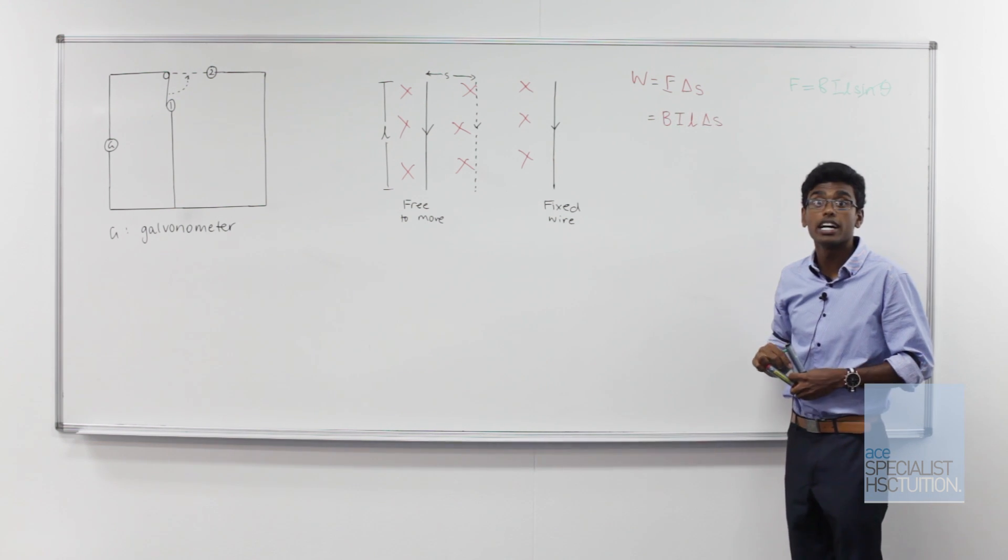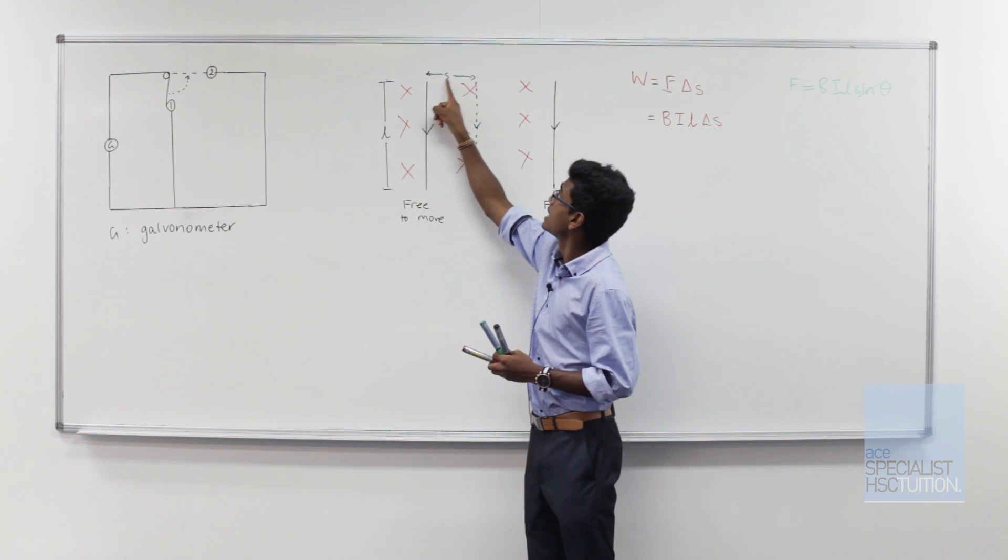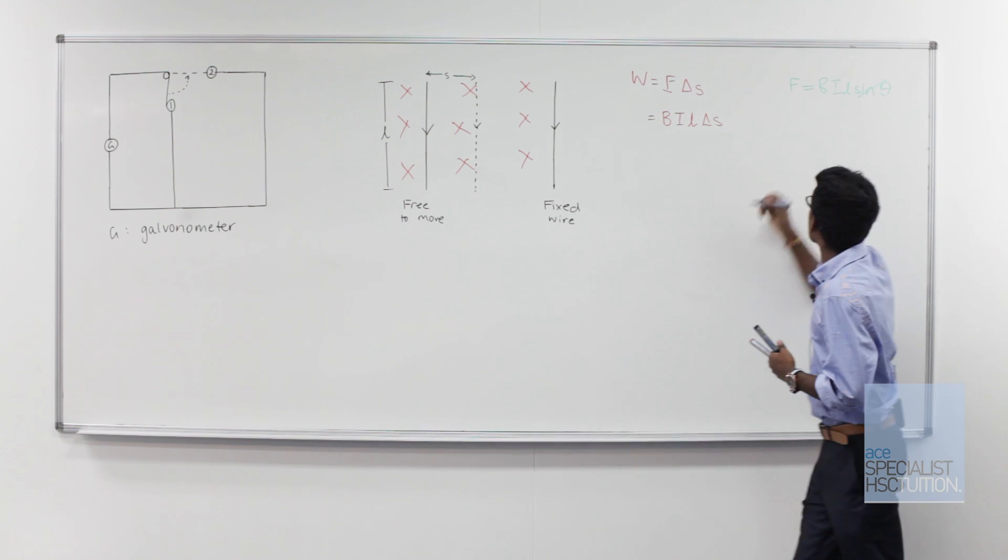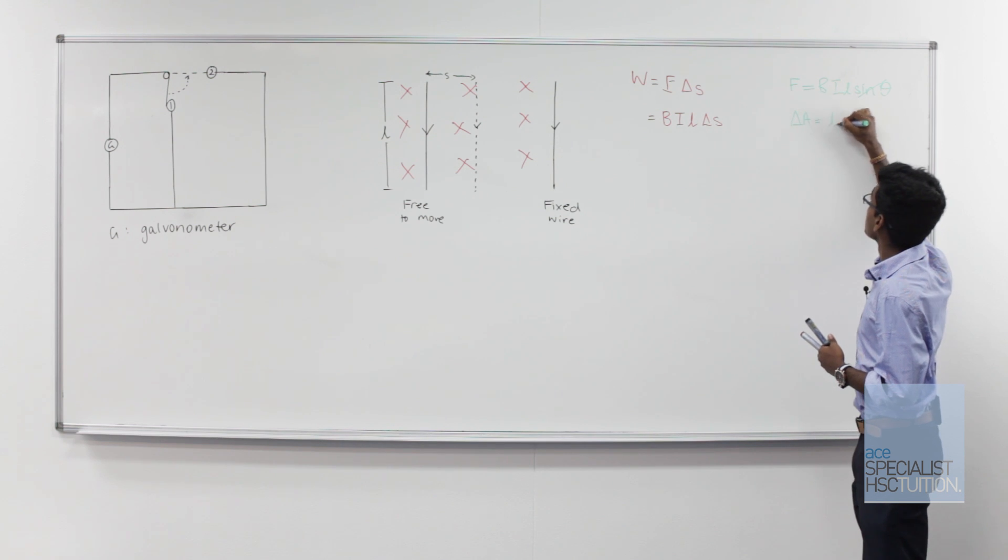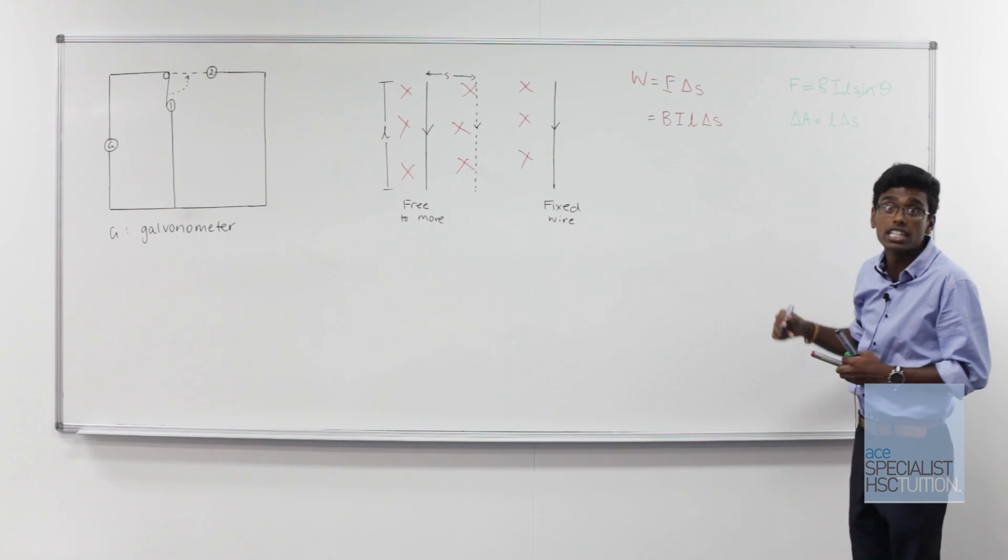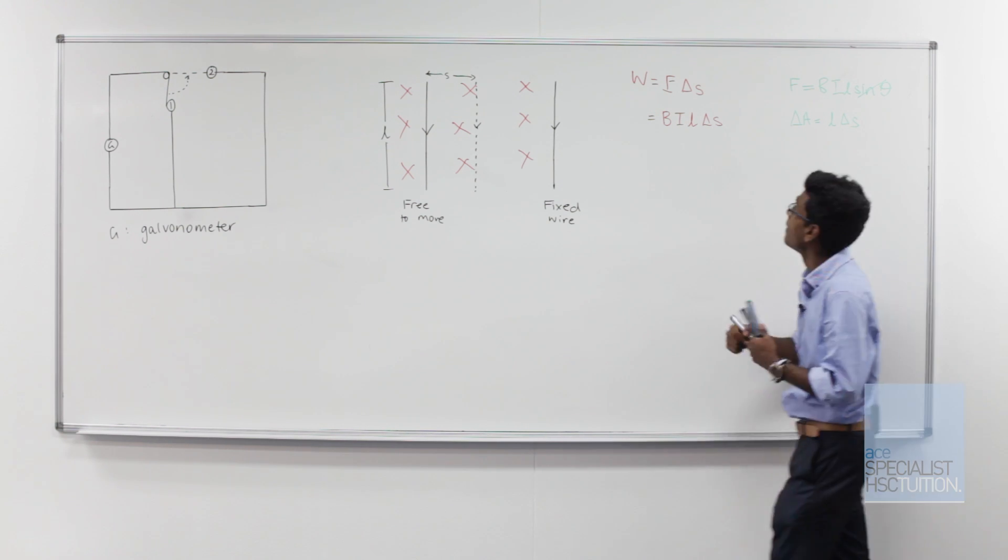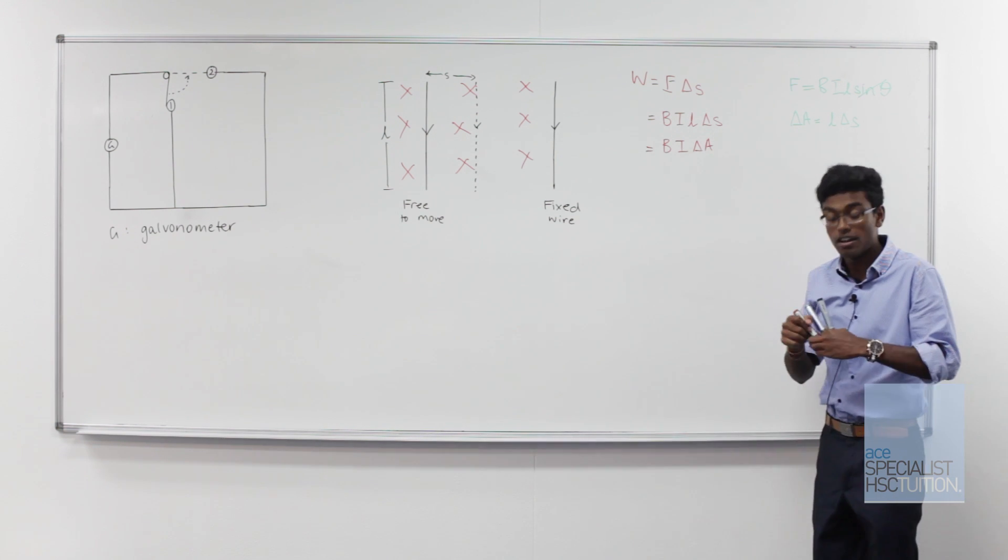Having a look at our diagram, we can see that L times s gives us the area of displacement. So we can write the change in area is equal to L times the change in horizontal displacement. So let's put that into our formula. So work is equal to current times the change in flux. Finally,